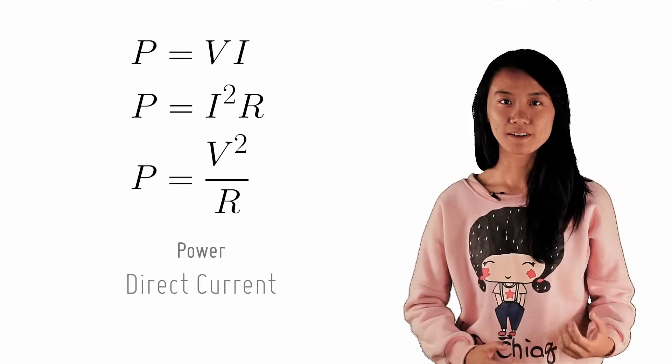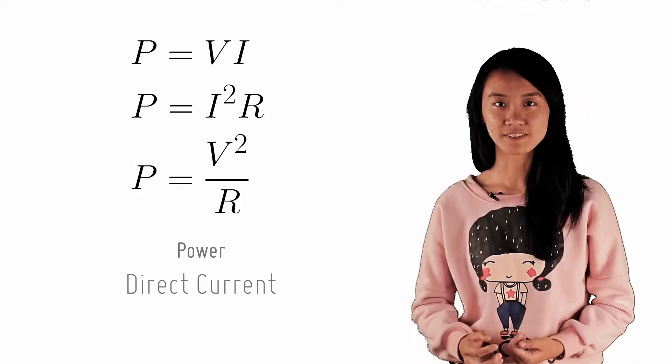In the previous lesson, you learned about alternating currents and its characteristics. Recall that in a direct current, the power output of current can be calculated by the following equations.